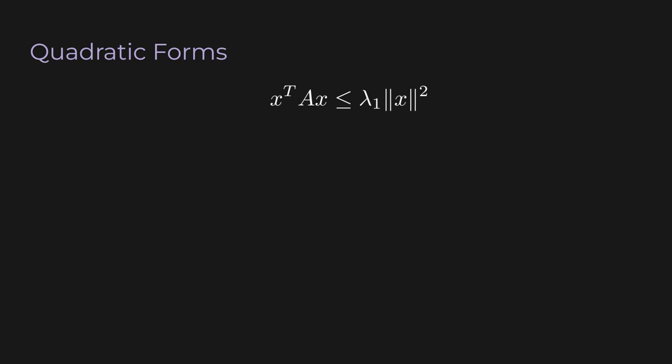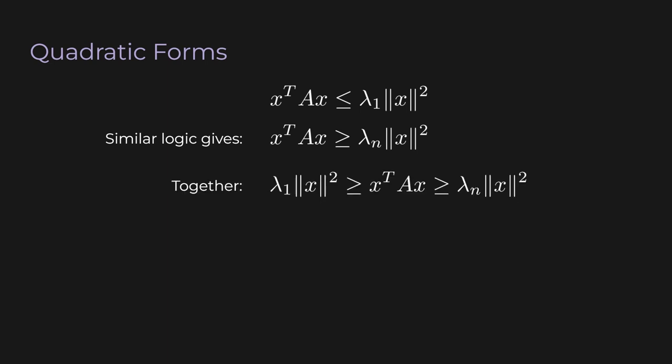Since x transpose x is just the square of the norm of x, we arrive at this simple inequality: x transpose Ax ≤ λ_1 times the squared norm of x, for any x. Going through the same derivation using λ_n, the smallest eigenvalue, we get the symmetric inequality: x transpose Ax ≥ λ_n times the squared norm of x. Together: x transpose Ax always lies between λ_n ‖x‖² and λ_1 ‖x‖².